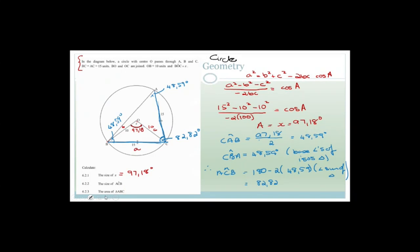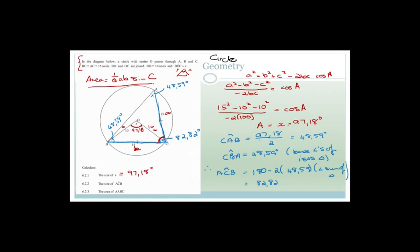Now they want the area of triangle ABC. Since there's no perpendicular height, we use the formula: Area = ½ × AB × BC × sin(ACB). We know AC = BC = 15 and angle ACB = 82.82°. So Area = ½ × 15 × 15 × sin(82.82°).